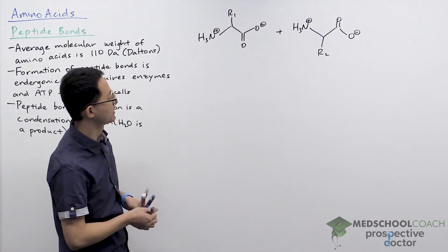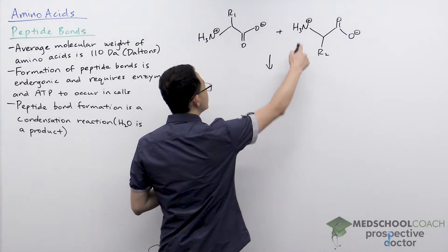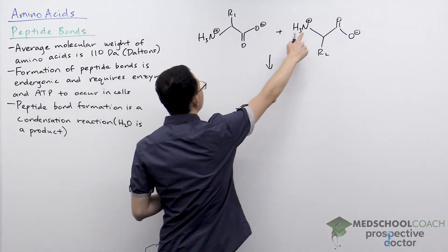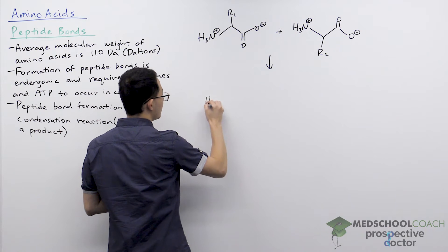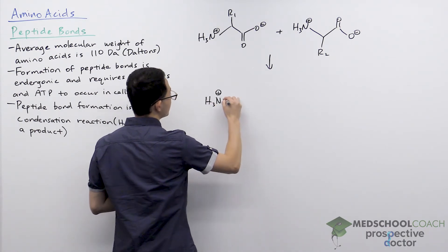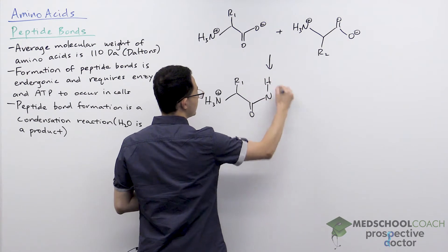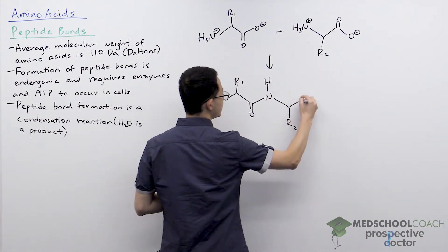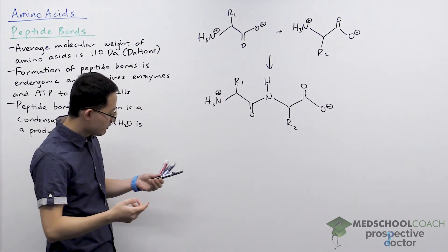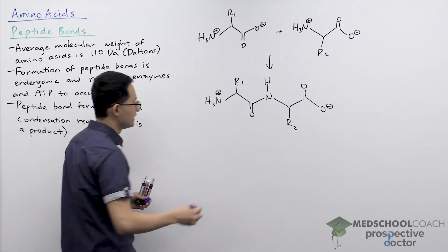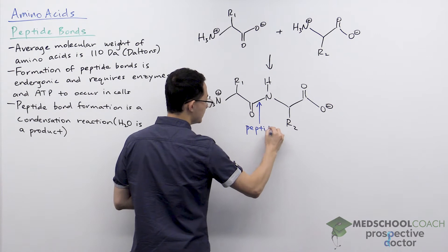I want to form a peptide bond between these two amino acids, and essentially the way it works is this amino group is going to act as a nucleophile and attack the electrophilic carbonyl carbon. Through this process we're going to form our dipeptide: H3N+ R1 carbonyl, the other amino group, our other side chain, and the carboxylate. When we look at this molecule now, we can identify our peptide bond - it's this bond that was formed right here.